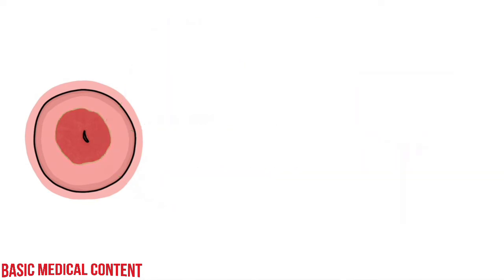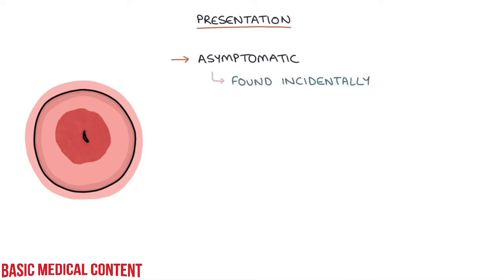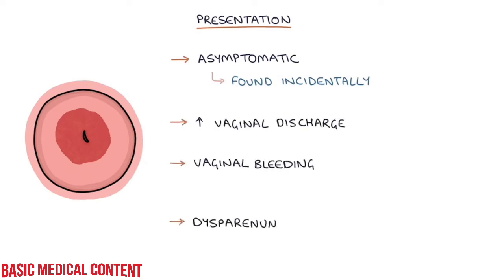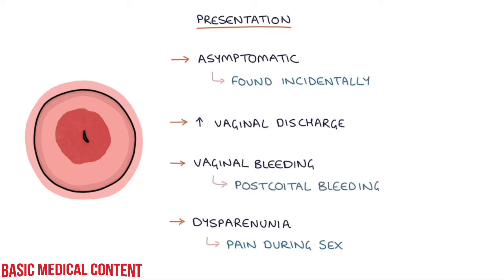Let's talk about the presentation. Many cervical ectropions are asymptomatic and are found incidentally during a speculum examination for another reason, for example during a smear test. Ectropion may present with increased vaginal discharge, vaginal bleeding, or dyspareunia, which is pain during sex. Intercourse is a common cause of minor trauma to the ectropion, triggering episodes of post-coital bleeding.